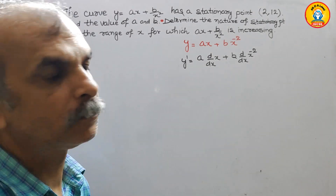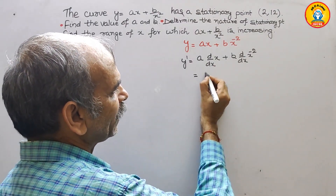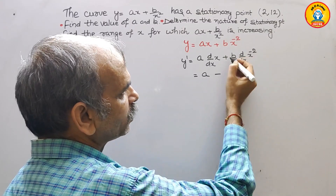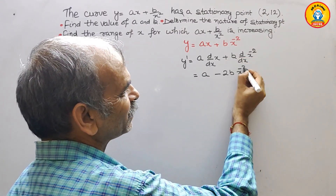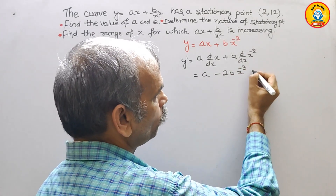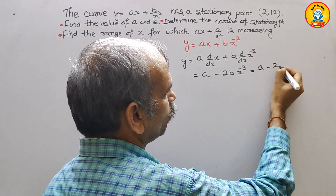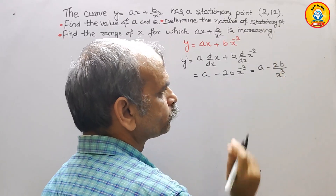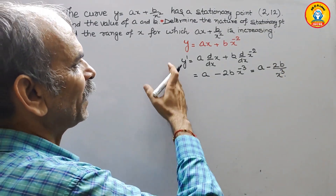If you differentiate, you will get a and here you will get minus 2b times x to the power of minus 3. We can rewrite this as y dash equals a minus 2b over x cubed. That is your y dash.